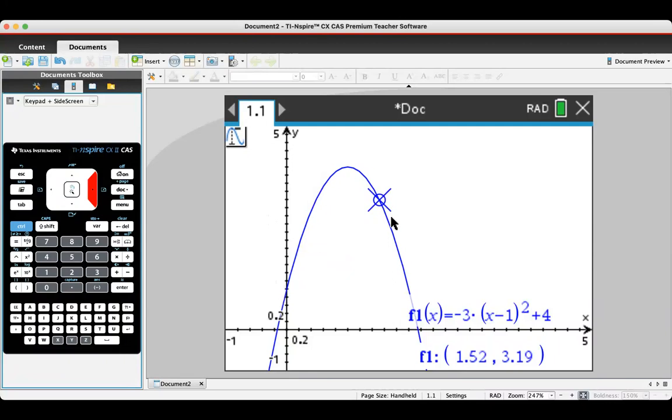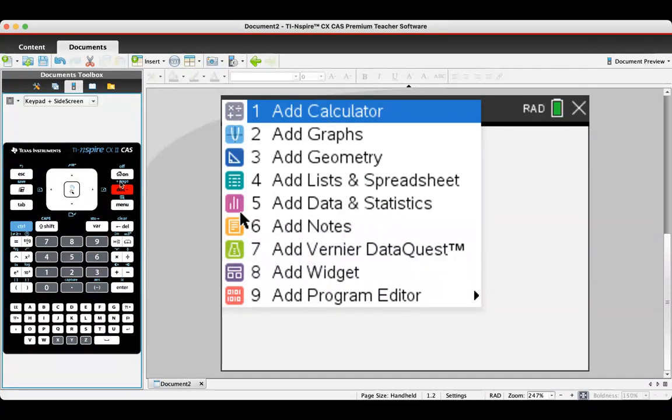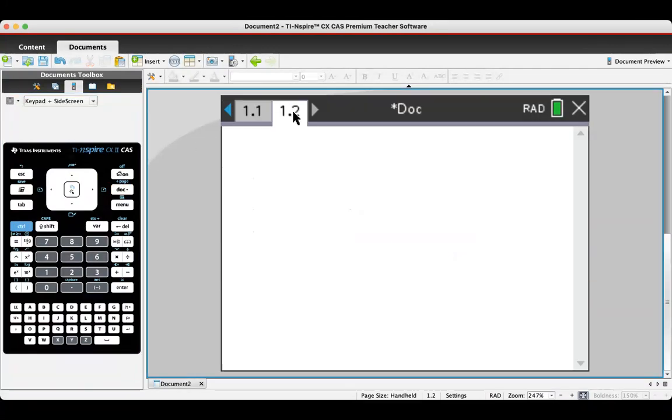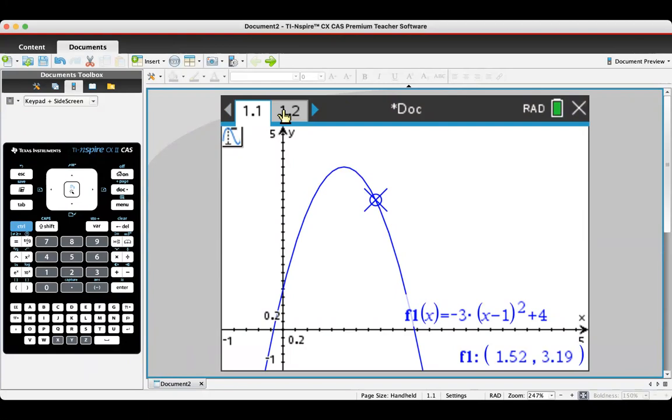So while tracing the graph is really good for the critical values, it's not that good for finding other specific values. But this is where the GDC actually is in some ways much more powerful than, say, Desmos or something like this, because what I can do is I can go control plus page, or control doc, and that's the plus page there.